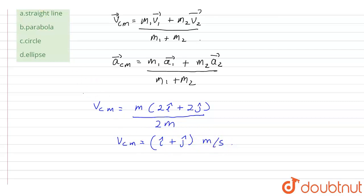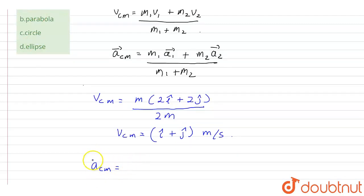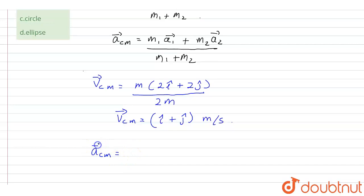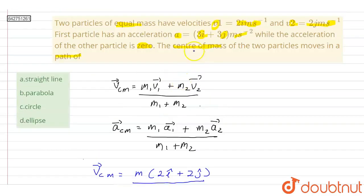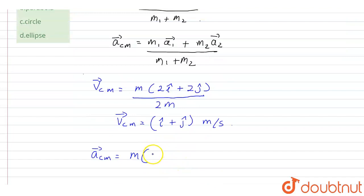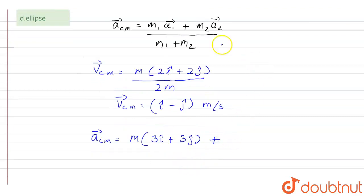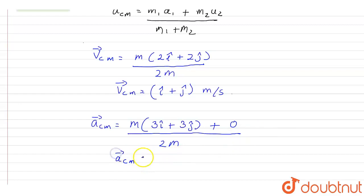Now the acceleration of center of mass, acm vector, is equal to m1*a1 plus m2*a2 divided by m1 plus m2. Here a1 is 3i cap plus 3j cap and a2 is 0, divided by 2m. So acm equals 3/2 (i cap plus j cap) meter per second squared.